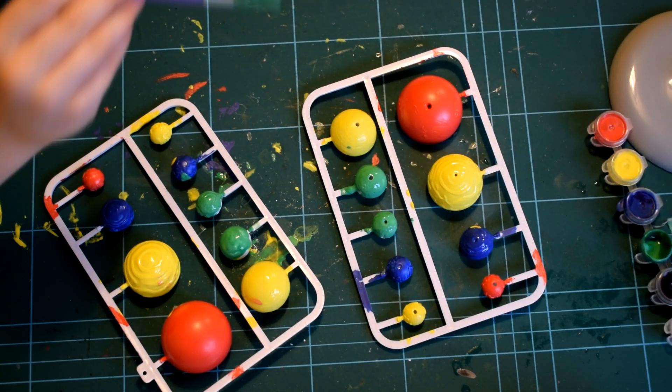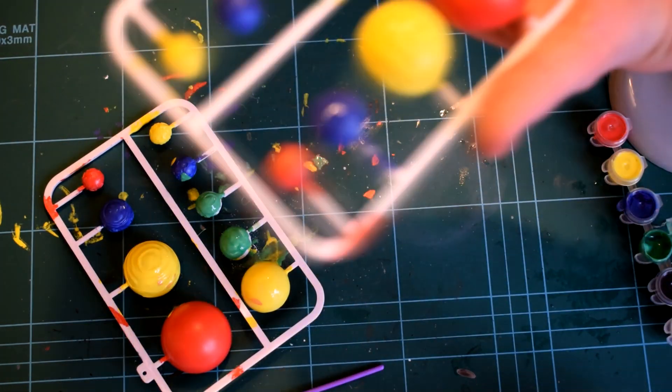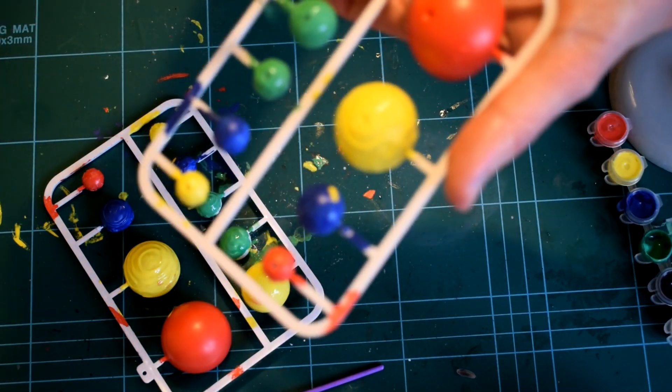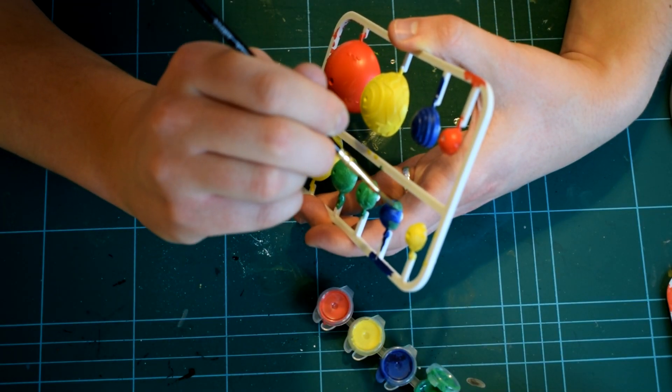The moulded parts do feature raised details to help represent clouds on the gas giants and craters on the smaller rocky worlds. Some of these details were picked out in different colours.